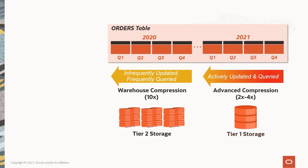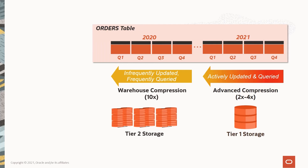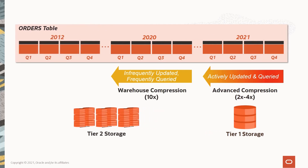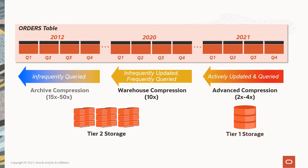Finally, what if we want to keep even more historical data — perhaps 10 years' worth for compliance and regulatory purposes? That data is never updated and very rarely queried. In this case, we'll want to maximize our compression with Oracle Archive Compression and keep it on our lowest cost storage tier. For this archive data, we can also flag it as read-only and save on repeated backups.